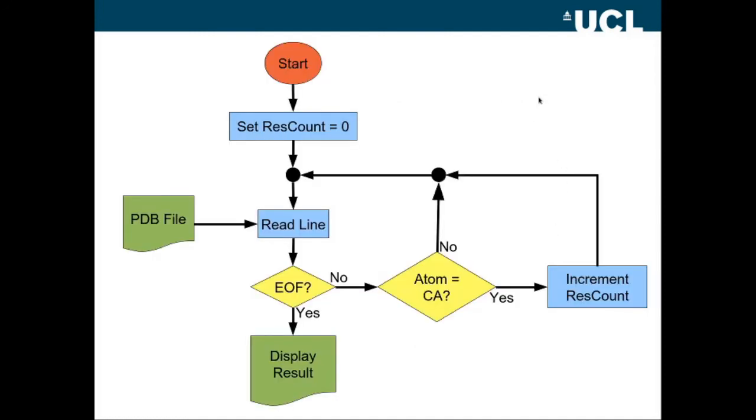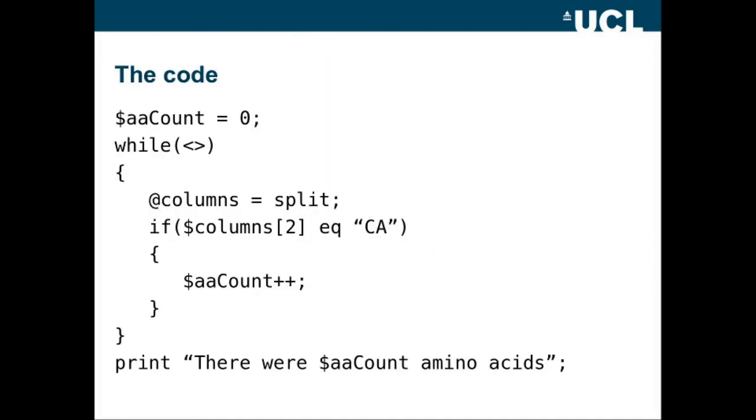Now, coming back to our flowchart for counting the number of C alphas in a protein databank file, how would we implement this in Perl? Well, here we go. This is all we need. We say AA count, amino acid count or res count or whatever we want to call it equals zero. While there is something in the file, we're reading a line at a time. Say at columns equals split. And we're interested in columns two. Remember, it's the third column in the file that contains the atom type. So if columns two equals C alpha, then we increment the amino acid count. And we loop round until we end the file, at which stage we say print, there were dollar AA count amino acids.